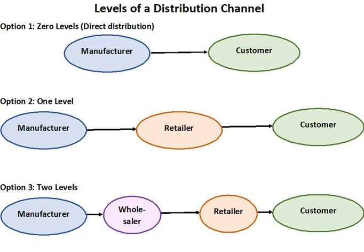Channel conflict can arise when one intermediary's actions prevent another intermediary from achieving their objectives. Vertical channel conflict occurs between the levels within a channel, and horizontal channel conflict occurs between intermediaries at the same level within a channel. Channel conflict is a perennial problem. There are risks that a powerful channel member may coordinate the interests of the channel for personal gain.